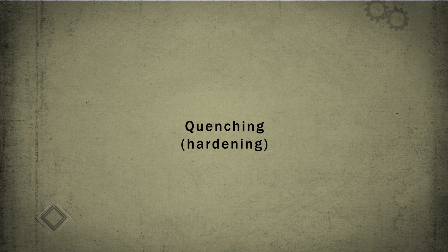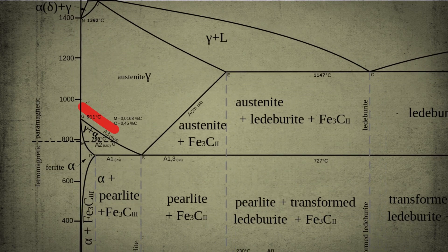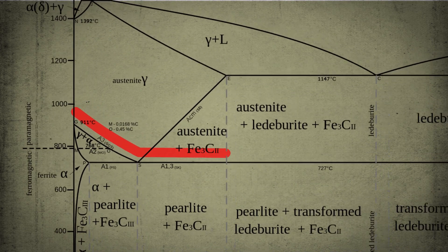Quenching consists in heating the steel to a temperature above the GSK line by 30-50 degrees, followed by rapid cooling.